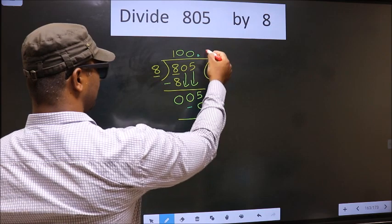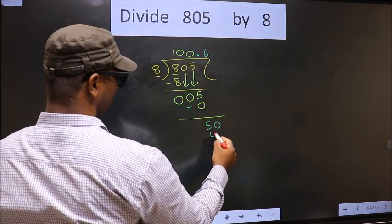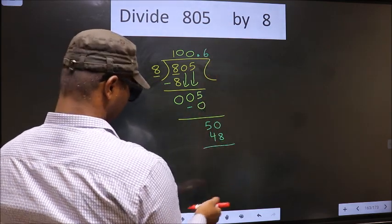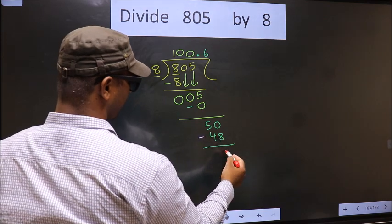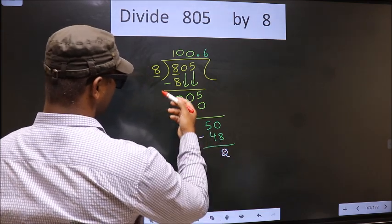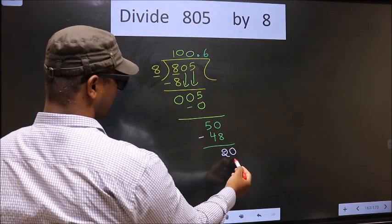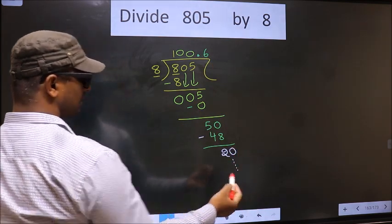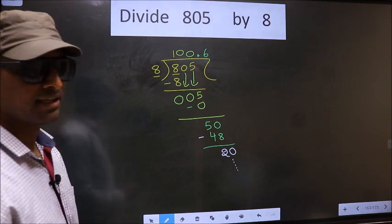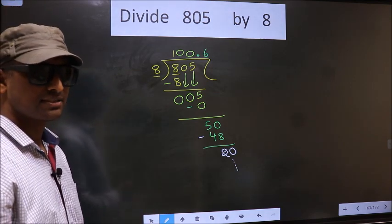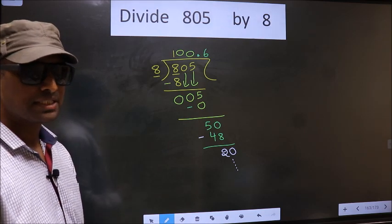Our number close to 50 in the 8 table is 8 times 6, which is 48. Now you subtract: 50 minus 48 is 2. 2 is smaller than 8. We already have a decimal, so you directly take 0 and continue the division. Did you understand where the mistake happens? You should not do that mistake.